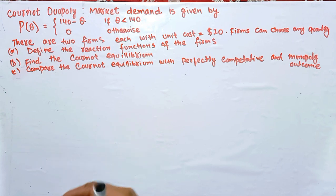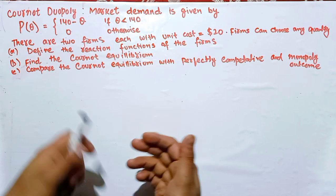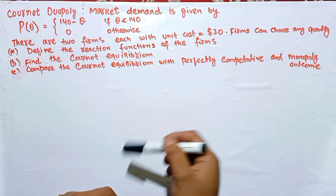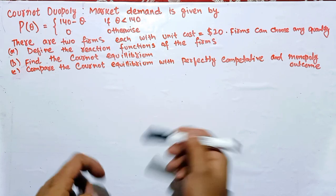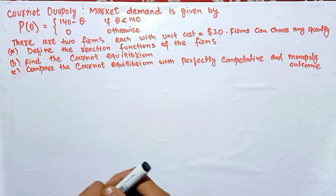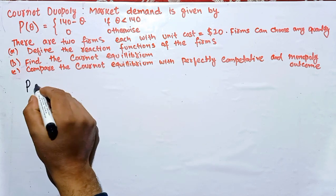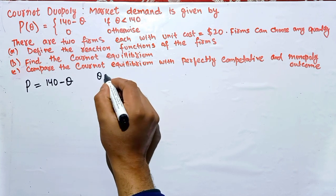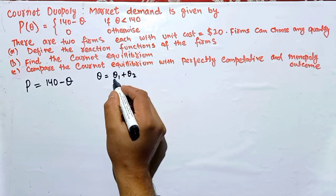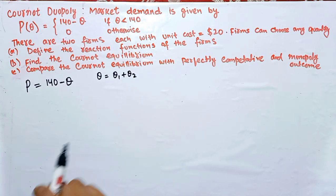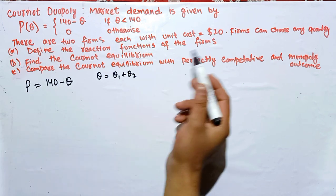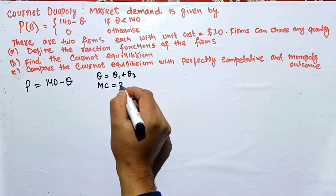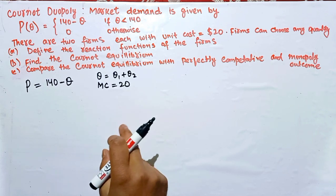In the Cournot duopoly model we take two firms, and in this case the two firms have identical marginal costs. Firms compete in terms of output — these are the assumptions of the Cournot duopoly model. We are given P = 140 minus Q, where Q equals Q1 plus Q2, the output produced by Firm 1 and Firm 2 respectively. This is our inverse demand function, and marginal cost is equal to 20.